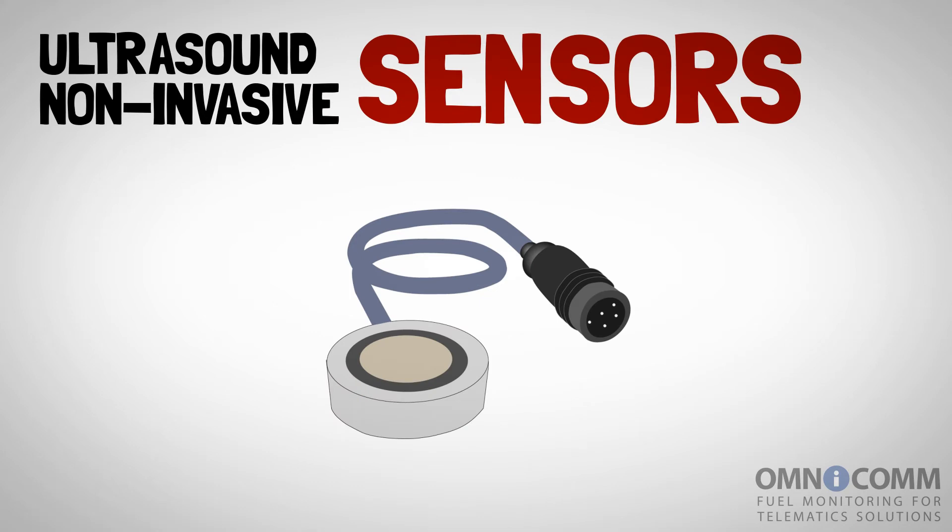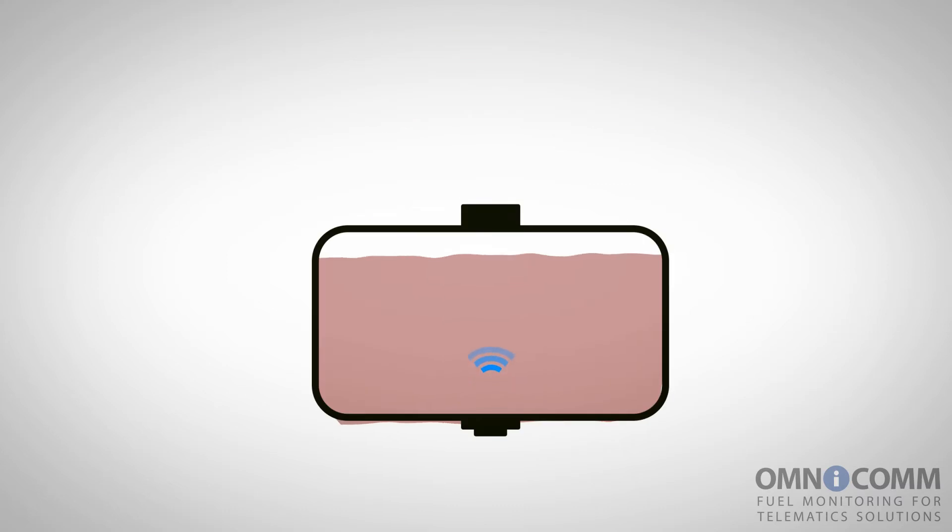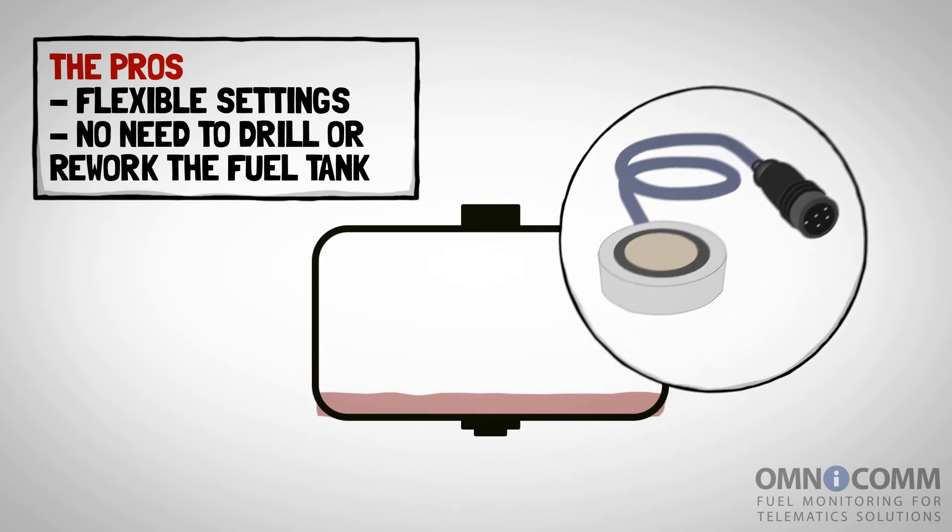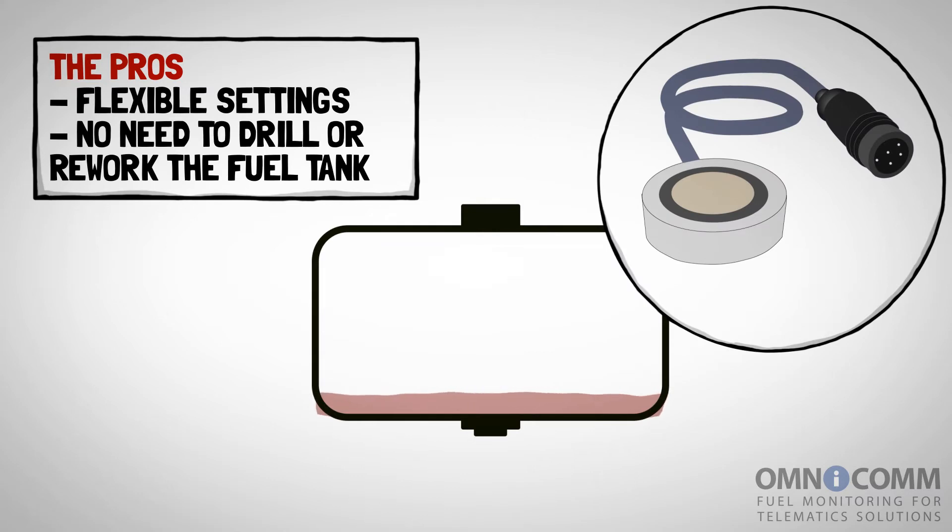Ultrasound Non-Invasive Sensors. The sensor measures the time it takes for an acoustic wave to travel from the bottom of the fuel tank to the surface of the fuel inside it and back. The wave frequency is chosen to make sure it can easily penetrate the side of the tank. The sensor is attached underneath the fuel tank on its external side of the bottom wall, and there's no need to drill or deform the fuel tank in any way to install it. This seems to be a big plus.